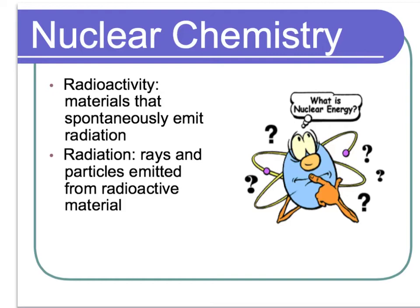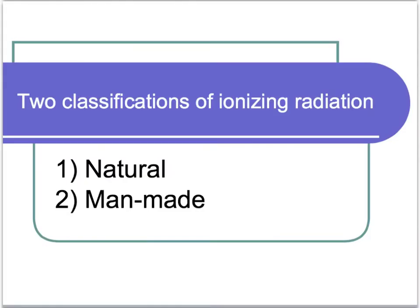The other term we need to talk about is radiation. Radiation is the rays and particles that are emitted from the radioactive material. When we talk about radiation, there's two different types of ionizing radiation. There's natural, and then there's also man-made.